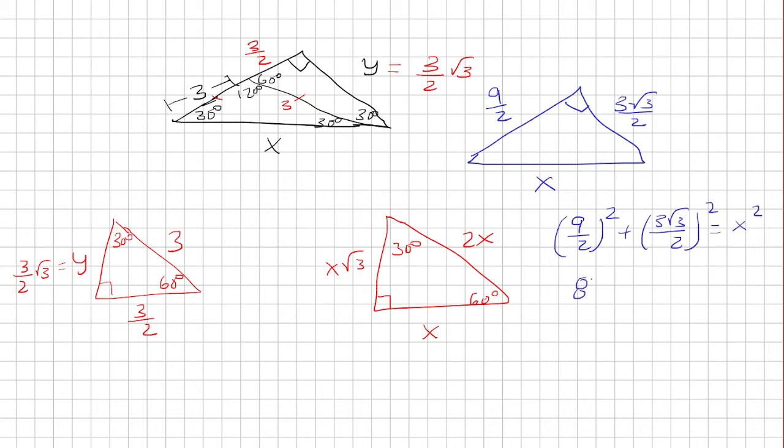9 halves squared is 81 over 4. Now 3 root 3 over 2, you have to square everything. So 2 squared on the bottom is 4. 3 squared is 9. The square root of 3 squared is 3. 9 times 3 is going to give me 27. Now if I add this, this becomes 108 over 4 equals x squared.